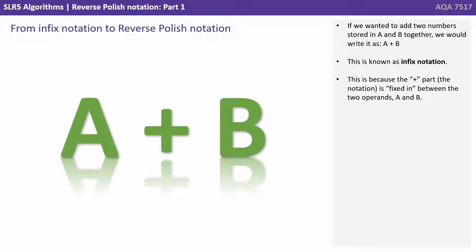If we wanted to add two numbers stored in A and B together we would write it as A plus B, and this is known as infix notation. This is because the operator, the plus, the notation part, is fixed in between the two operands A and B.